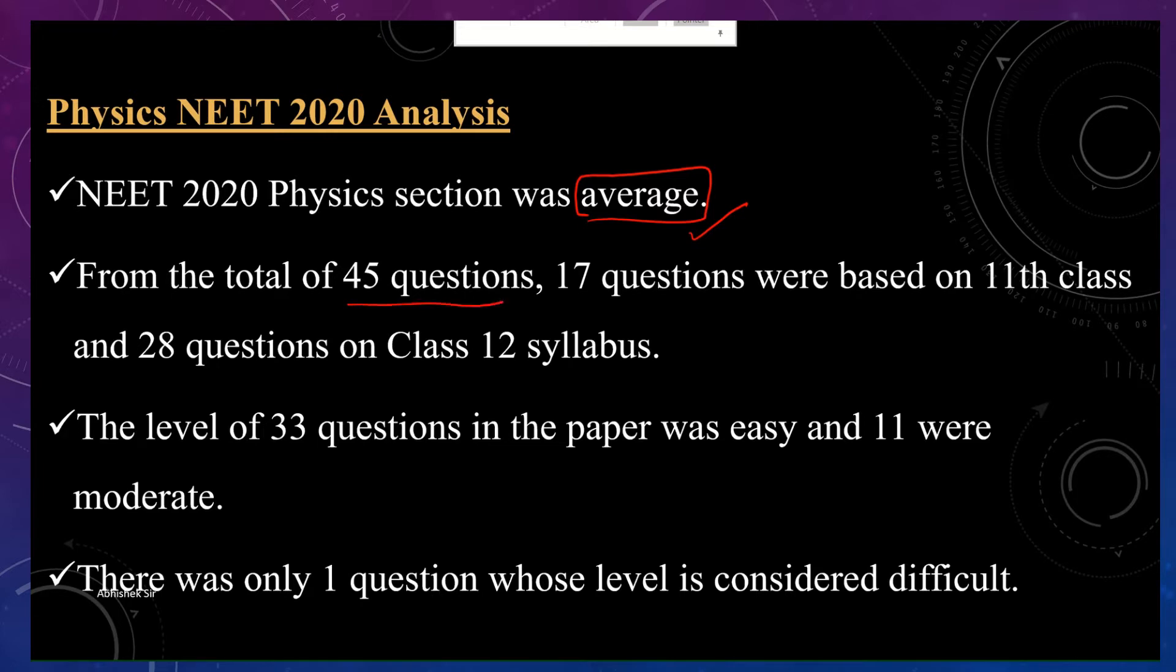Out of 45 questions, 17 questions were based on class 11th and 28 questions were based on class 12th. So this time class 12th was more. The level of 33 questions in paper was easy and 11 were moderate. If you look at physics, there are a lot of questions that are easy in the category.